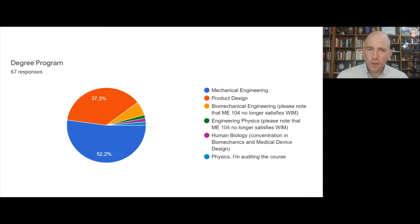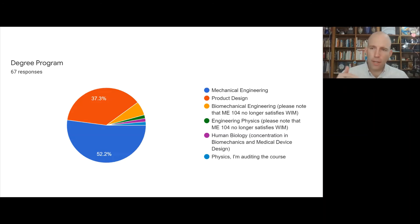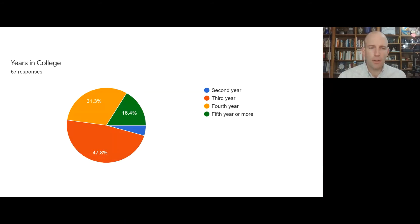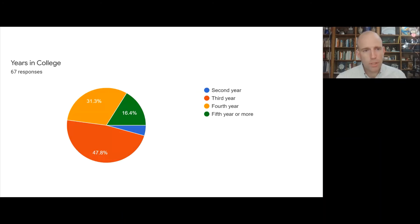Most of us this quarter are mechanical engineers. We also have about a third of the class in product design and a smattering of other majors. About half of us are in our third year as juniors, taking the course in sequence. We have about a third that are seniors and 15% that are super seniors or co-terms. So we have a diverse set of experience with college.